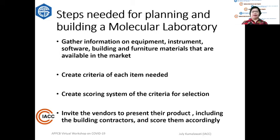After that, you can start gathering all the information on the equipment, instruments, software, building, and furniture materials available in the market in your area. Then create the criteria of each item needed. You can create a scoring system to be used as selection criteria, and you can start inviting all the vendors to present their products, including building contractors, and score them according to the criteria you have already determined.